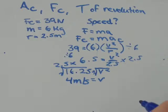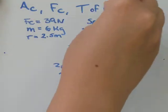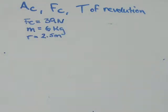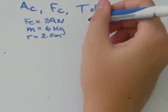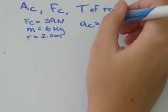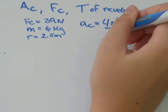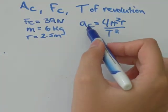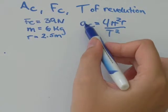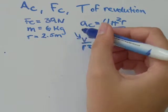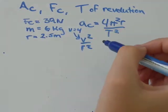Then we're asked what is the period of revolution. We know that centripetal acceleration is also equal to 4 pi squared times r over the period squared. But we know that the centripetal acceleration is also equal to v squared over r. And we just solved for v. And we found that v equals 4.